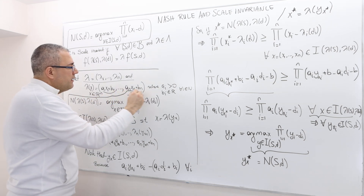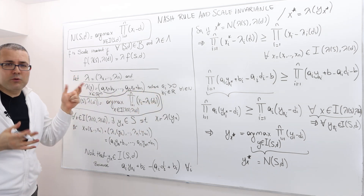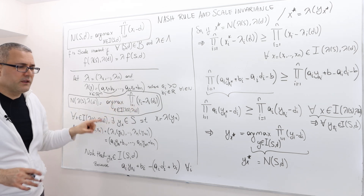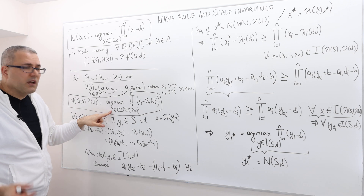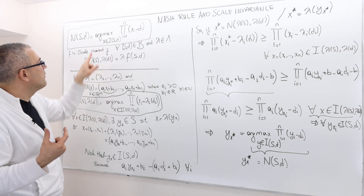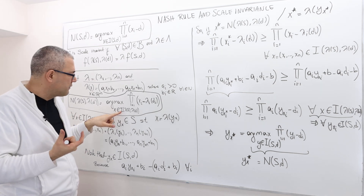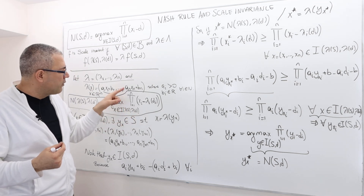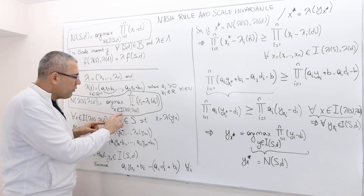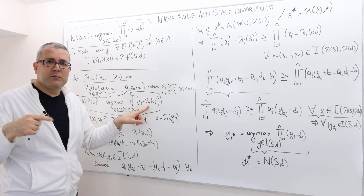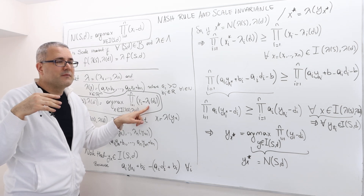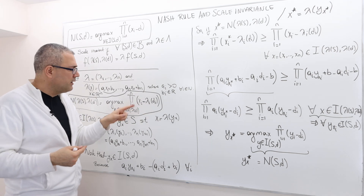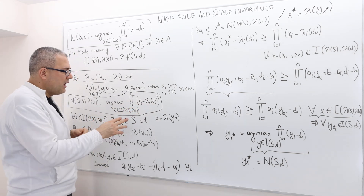How do I write the Nash bargaining solution for the transformed game? The Nash bargaining solution of the transformed game is written as argmax — this time the payoff vectors are coming from individually rational payoffs from the transformed bargaining problem, lambda S, lambda d. The multiplication from i equals 1 to n of xi minus lambda i di, where I have already transformed both the payoff vectors and the disagreement vector.